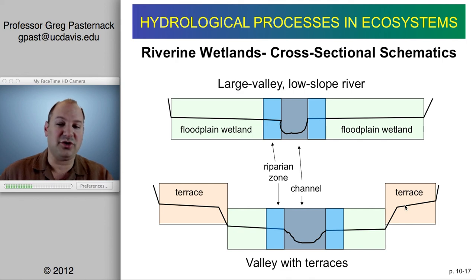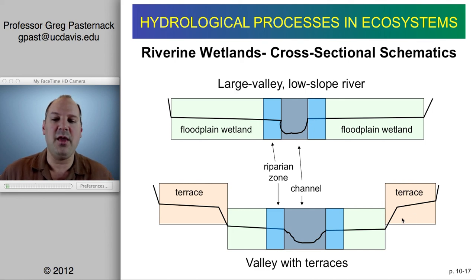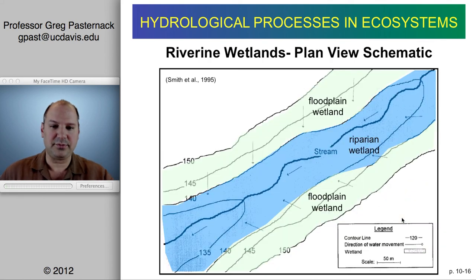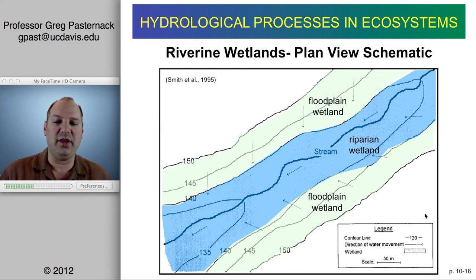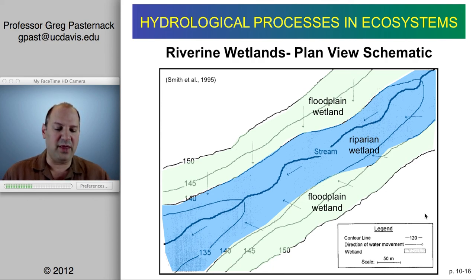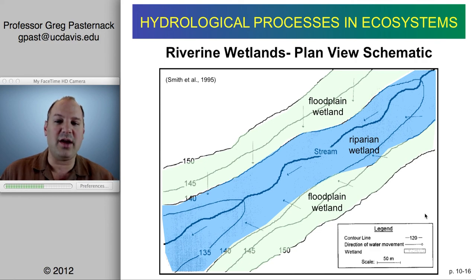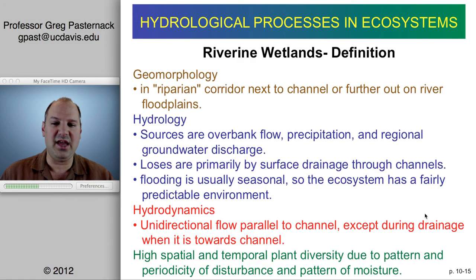Contrast that with a valley context where you have multiple depositional or erosional surfaces — terraces — that because of their different elevation probably are not wetlands. With a riverine wetland, you typically have a zone adjacent to the channel flooded significantly more frequently — the riparian wetland — and then further away the floodplain wetland that is inundated enough to create hydric soil conditions and adapted vegetation.